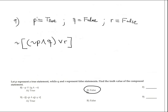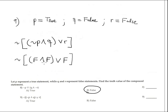Number nine: evaluate the expression with the same truth values. Negation P is false, disjunction Q is false; conjunction false, disjunction R is false. This conjunction is false, disjunction false is false. Negation of false is true, so the final answer is true, which is option A.